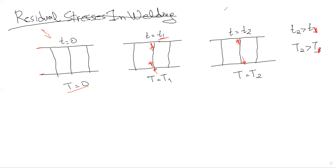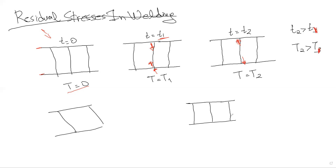Now, if we think about something else: if we have exactly the same construction — three columns — but we heat everything and cool down everything with the exact same heat cycle, so column one, column two, and column three are all heated to the same temperature, then they expand all together and shrink all together. Therefore, there are no differences in stresses and no residual stresses are created, because they all follow exactly the same heat treatment cycle.